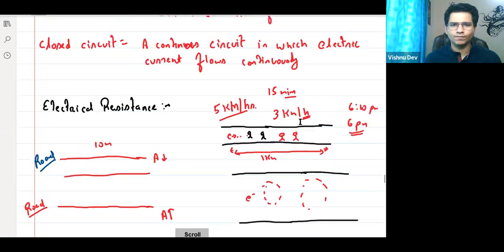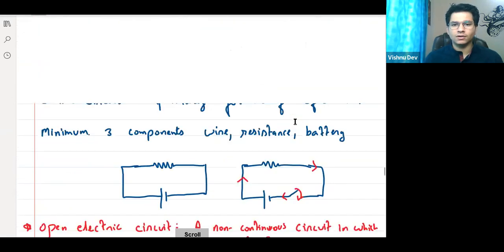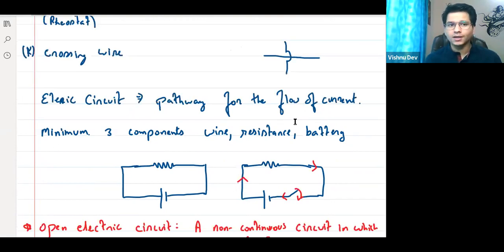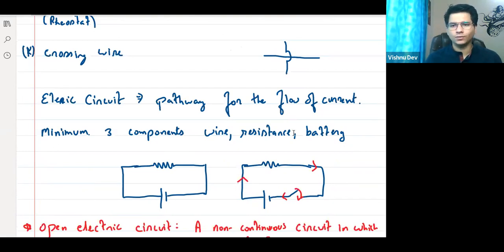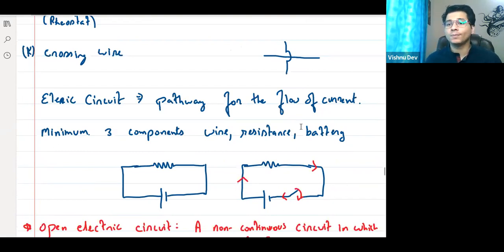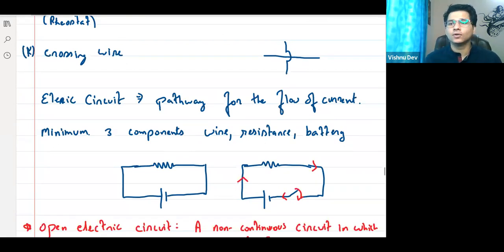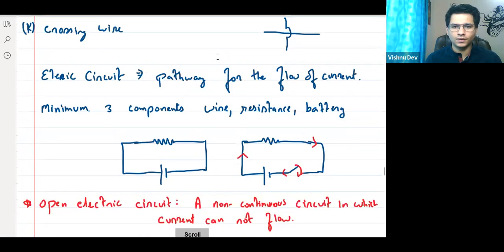We talked about the basic definition of electric current, which is the rate of flow of charge per unit cross-section area. Then we talked about the conditions required for charge to flow. First condition: there should be a potential difference. Second: there should be a closed circuit.